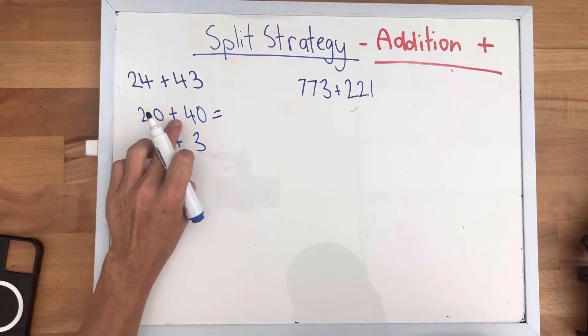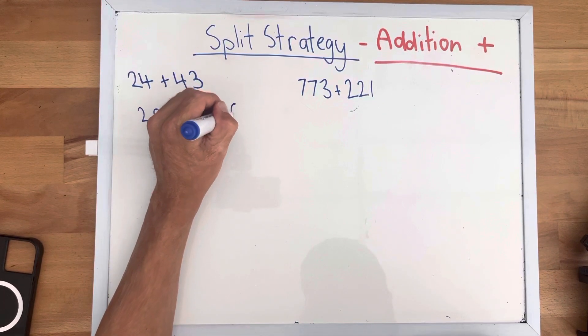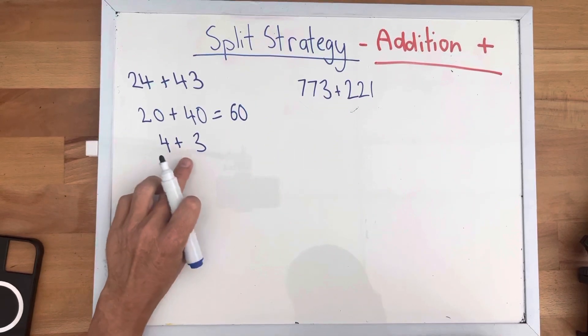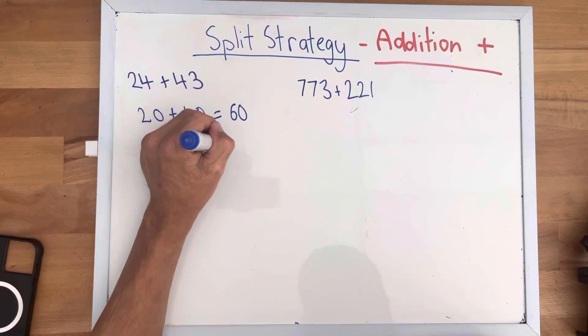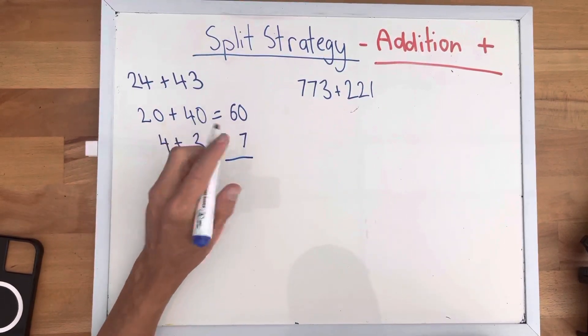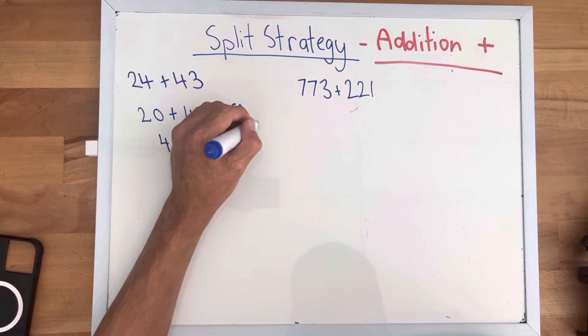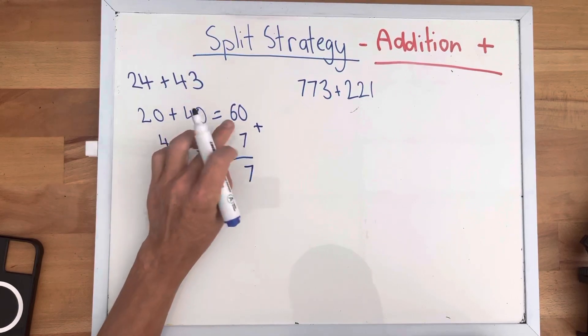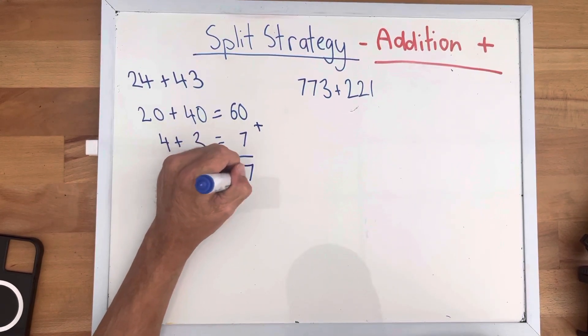20 plus 40 equals 60. 4 plus 3 equals 7. And then we add our ones together. 7 plus 0, which equals 7. And 6 plus nothing, which equals 6.